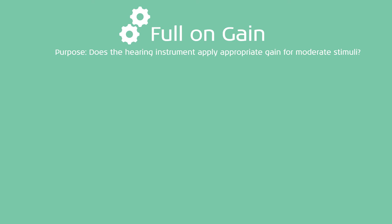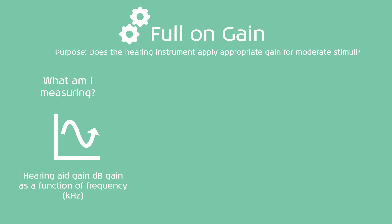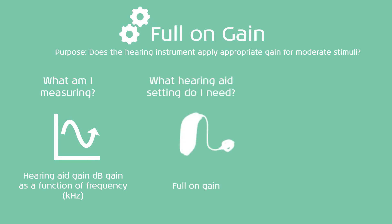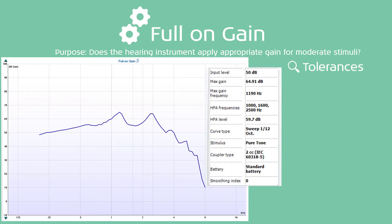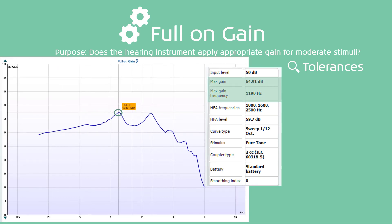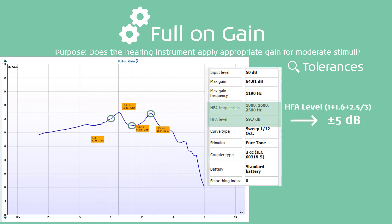The second measurement in this protocol is the full on gain measurement. The purpose is to find out if the hearing instrument applies appropriate gain to moderate stimuli. We measure hearing aid gain in dB gain as a function of frequency in kilohertz, with the hearing aid set to full on gain. This time we use a 50 dB SPL input, still a pure tone sweep from 200 Hz to 8000 Hz. You will read the max gain, max gain frequency, and the HFA level, which should be plus or minus 5 dB versus the manufacturer standard.